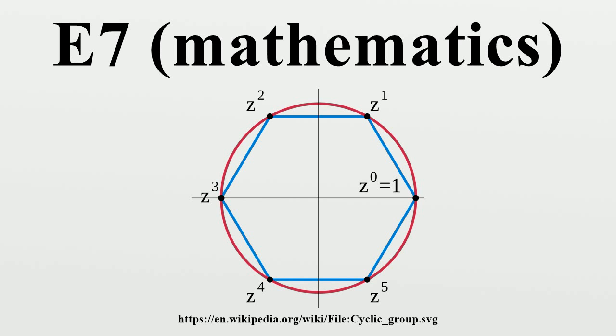All adjoint forms of E7 have fundamental group Z/2Z in the sense of algebraic geometry, meaning that they admit exactly one double cover. The further non-compact real Lie group forms of E7 are therefore not algebraic and admit no faithful finite-dimensional representations.